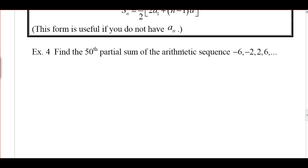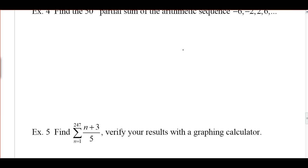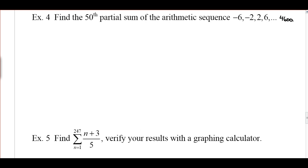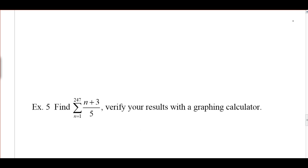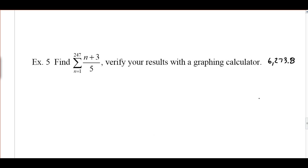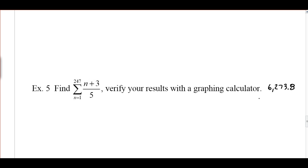We've got two more examples. Go ahead and give those a try and see what you get. You should get 4,600 for example four, and 6,273.8 for example five. You can use your graphing calculator to verify, but make sure to show your work. Write down any questions so you don't forget to ask me the next time you see me in class. We'll see you next time.